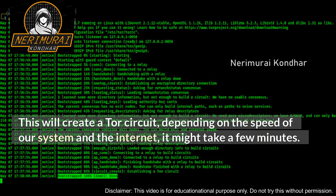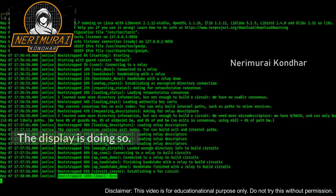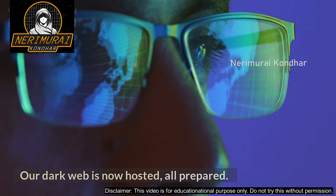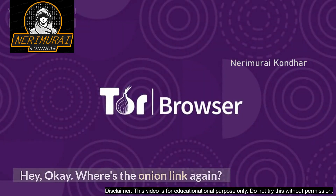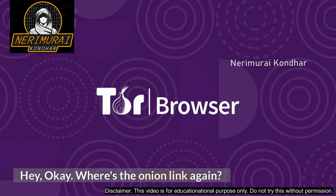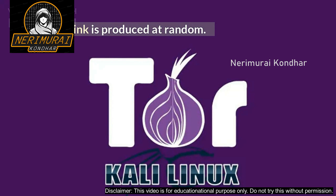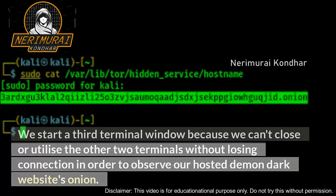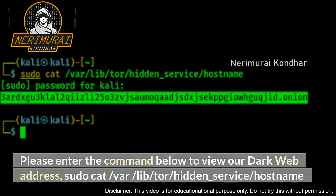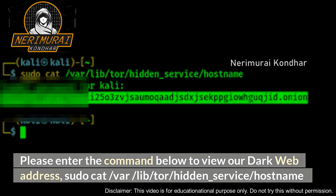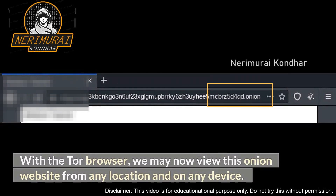This will create a Tor circuit. Depending on the speed of our system and the internet, it might take a few minutes. Once done, our dark web site is now hosted and prepared. The onion link is produced at random. We start a third terminal window because we can't close or use the other two terminals without losing connection. To view our hosted dark web site's onion address, enter the following command: sudo cat /var/lib/tor/hidden_service/hostname.